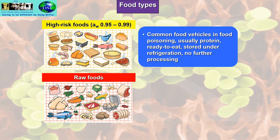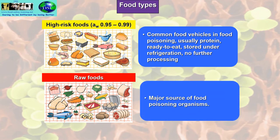Raw foods — vegetables, meat, and fish — are a major source of food poisoning organisms. If raw foods come into contact with high-risk foods, we've got a big problem — that's called cross-contamination. Whether directly by touching, or indirectly via a fomite such as a cloth or a hand touching the raw food then the high-risk food, you'll get cross-contamination. If the high-risk food is then left in warm conditions, bacteria will grow and the person eating it will get food poisoning.